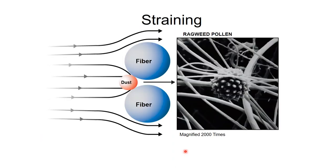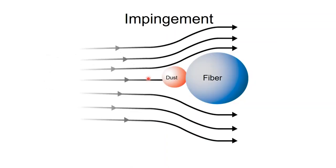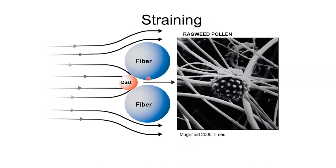Third is straining — like a pasta strainer, particles too big to fit through the holes get blocked. Once particles clog those holes, subsequent particles impinge on what's already there, and the filter does an increasingly good job. The dirtier the filter, the better it filters — but it also creates more pressure drop. At some point the pressure drop becomes too much for the equipment and we're starving airflow, so it needs to be changed.